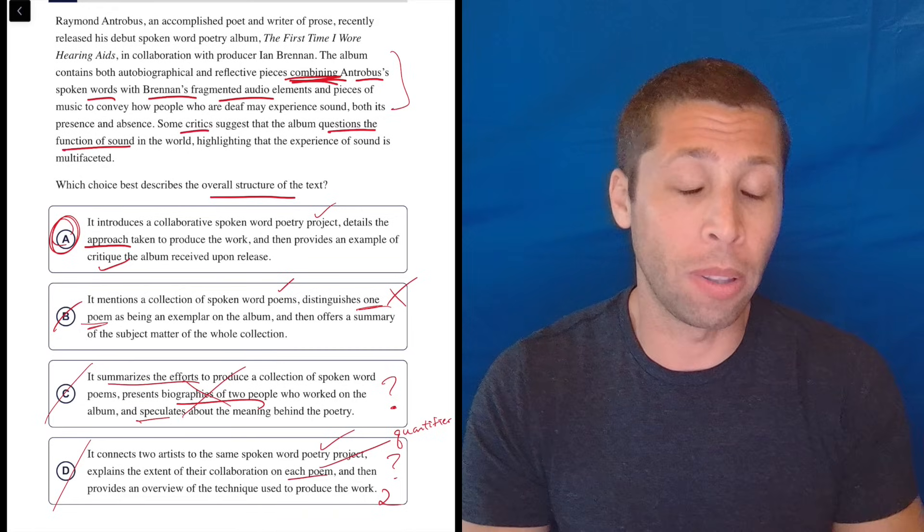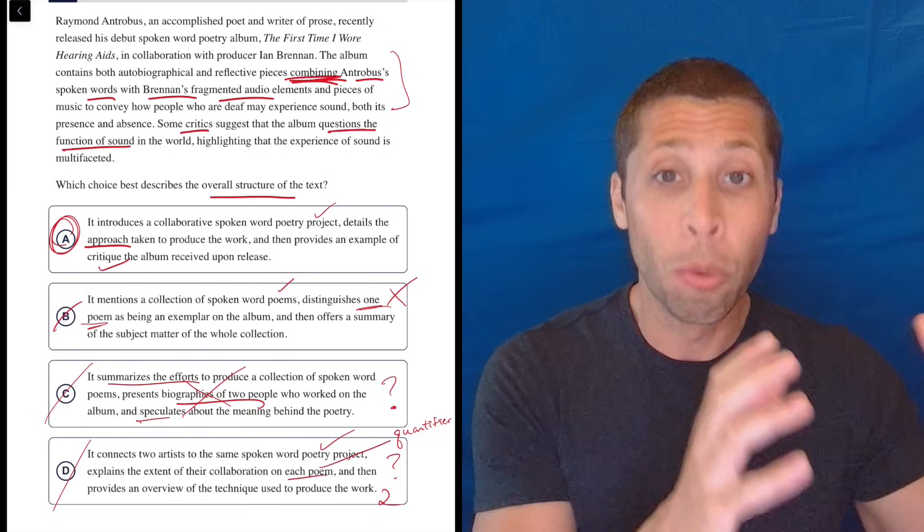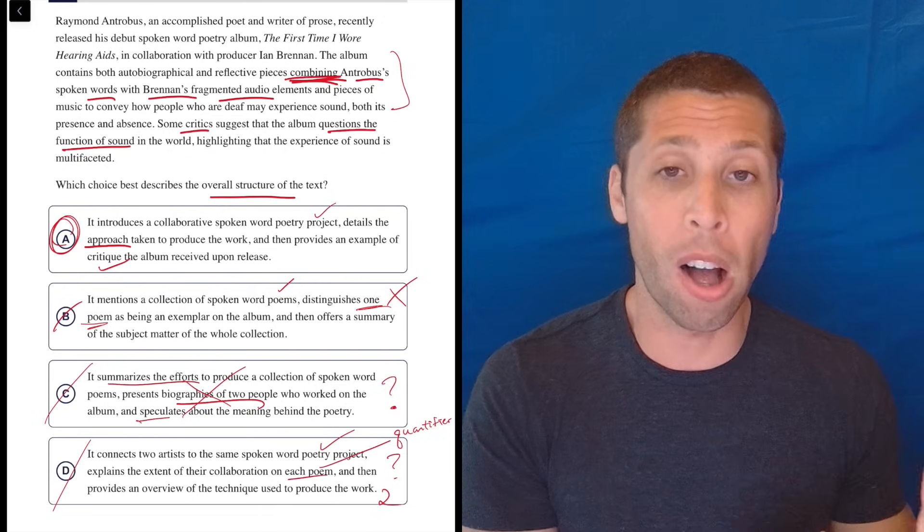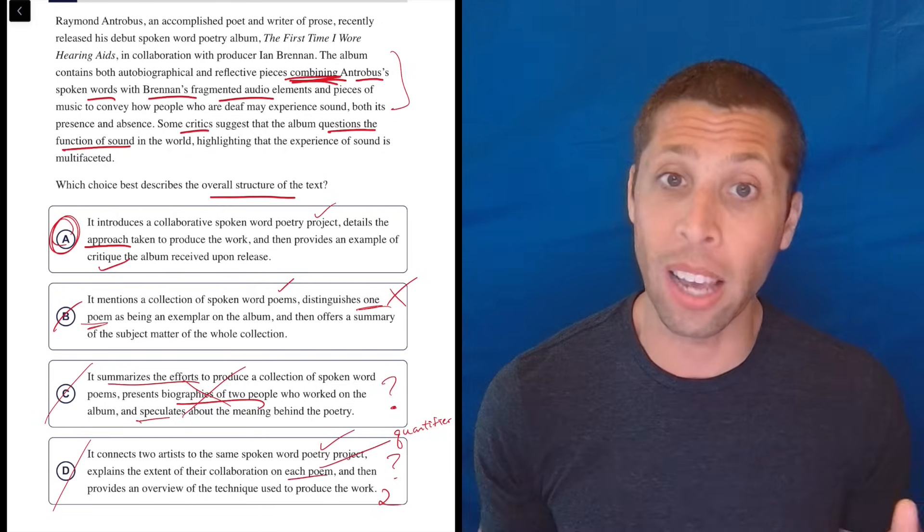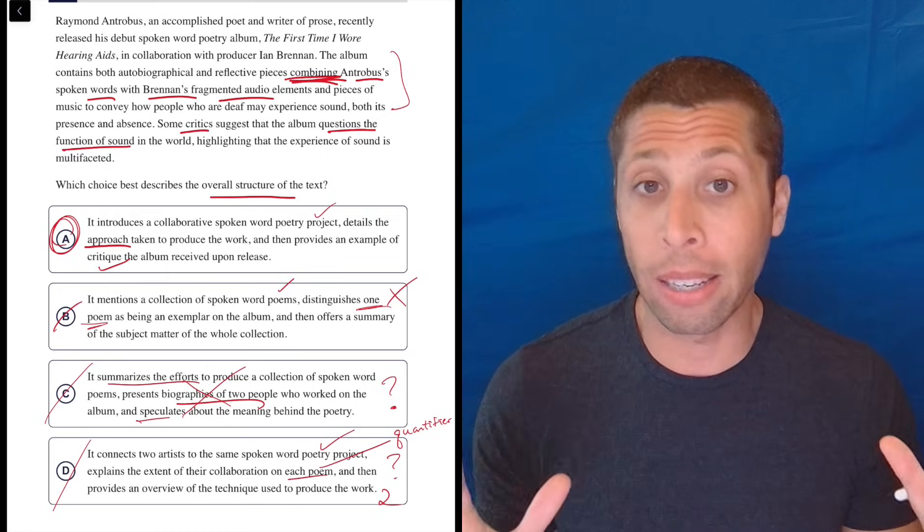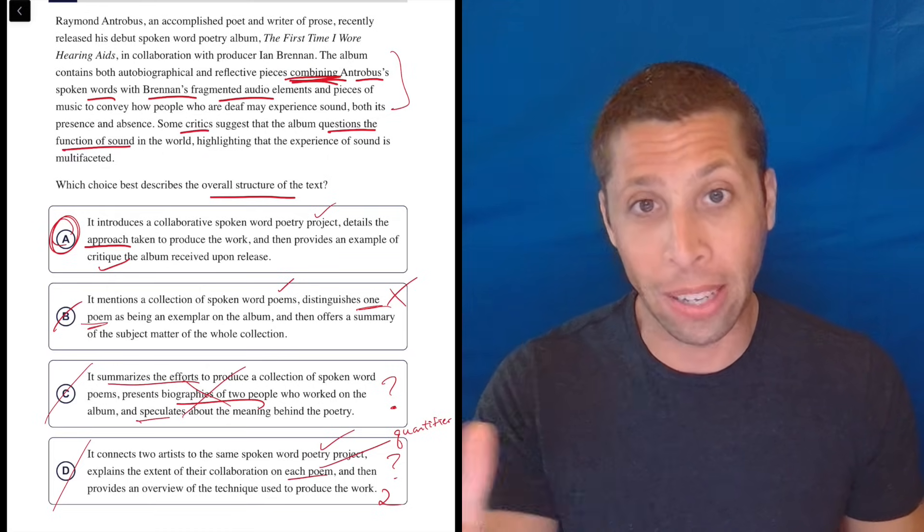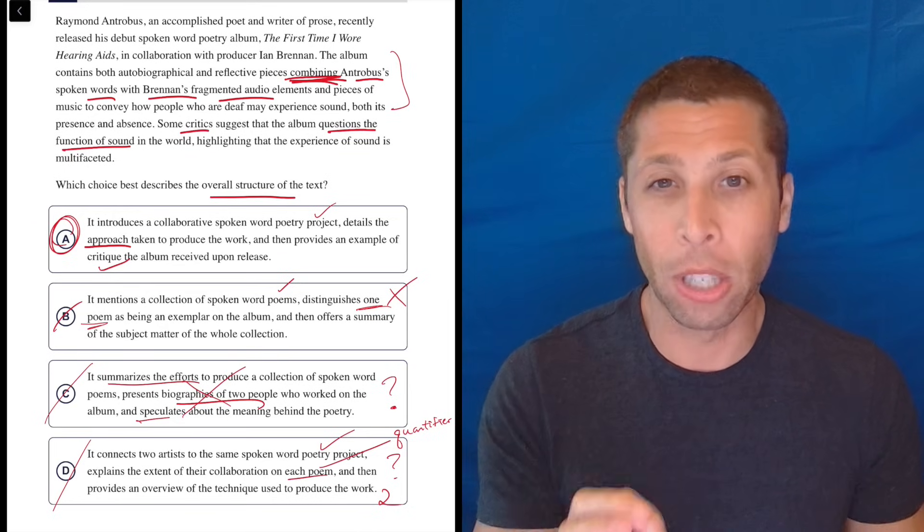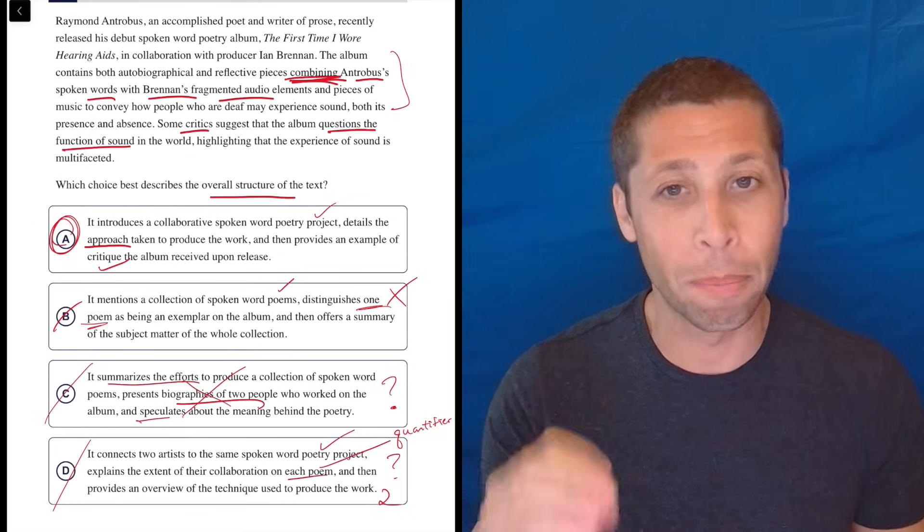And a lot of times with these reading questions, that's what we're trying to do. The best case scenario is we can prove the right answer right, and we can also prove each of the wrong answers wrong. But for the sake of time, sometimes one of those paths is easier than the other, and we might just choose the one and go with the path of least resistance. And so in this case, I think it's easier to prove the right answer. But regardless, proof is always what we're looking for. Proving answers, not just feeling them, proving them.